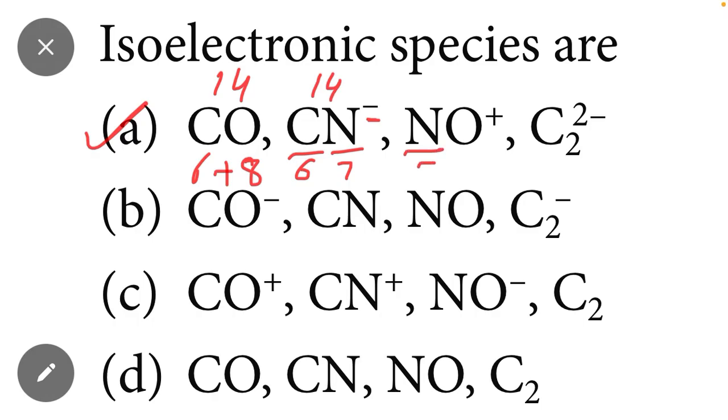Similarly, nitrogen has seven electrons and oxygen has eight electrons, but plus one means minus one electron, so 7 plus 7 equals 14 electrons. Similarly, C₂²⁻: one carbon has 6 electrons plus second carbon has 6 electrons, minus 2 means 2 electrons more, so also 14 electrons.